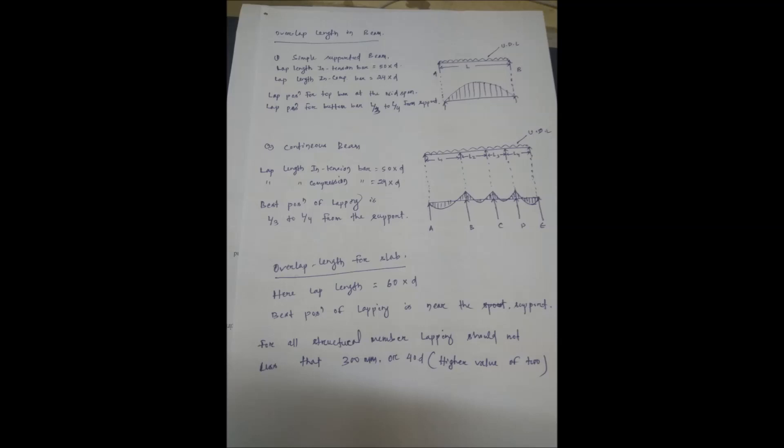maximum tension at the mid span and top bar experiences tension near the support. So lapping position for bottom bar in simple supported beam is nearer to support, that is L/3 to L/4 from the support, and lapping position for top bar is at the mid span. Here lap length in tension bar is equal to 50D and lap length in compression bar is equal to 24D, where D is diameter of the